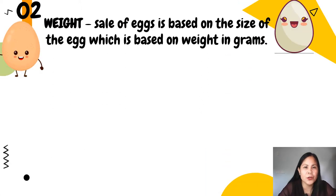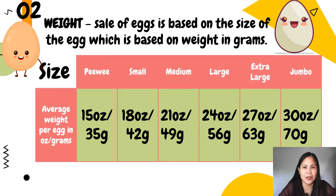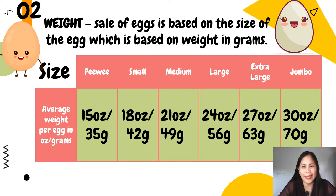Another standard set by the Bureau of Products Standards Philippines is that eggs are graded according to weight. Sale of eggs is based on the size of the egg which is based on weight in grams. The sizes are Peewee, Small, Medium, Large, Extra Large, and Jumbo, with their average weight per egg in ounces or in grams. Eggs in the same carton may appear to be different sizes, but their weight will be within a similar range.